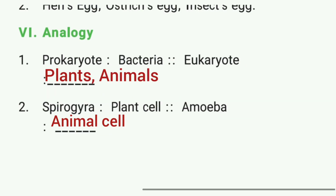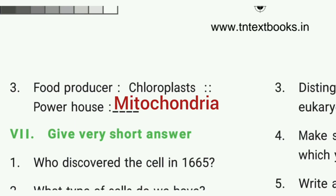Then analogy. First one: prokaryotic is to bacteria as eukaryotic is to plants and animals. Second one: the answer is animal cell. Third one: food producer is to chloroplast as power house is to mitochondria.